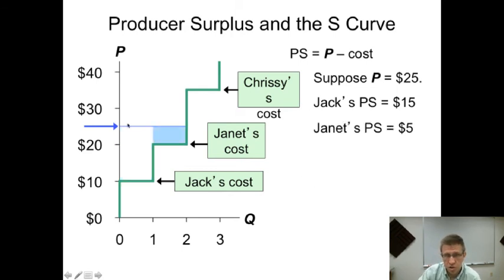If it's twenty-five dollars, well, Jack gets fifteen. Janet's also happy to provide the service. Jack definitely is in there and is thrilled and gets fifteen in producer surplus. But Janet's still happy to get in there. She needs twenty to be induced into the market. But for twenty-five, she gets five dollars in producer surplus. So the total producer surplus is going to be twenty dollars.